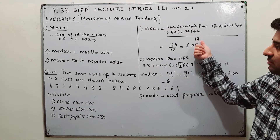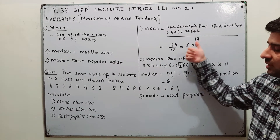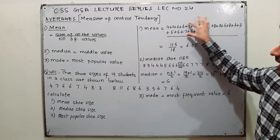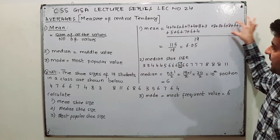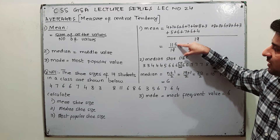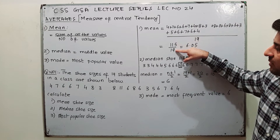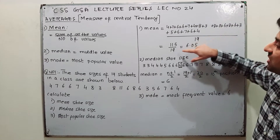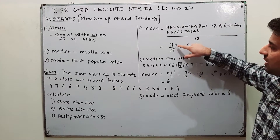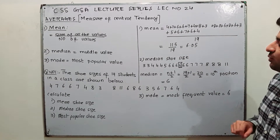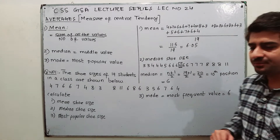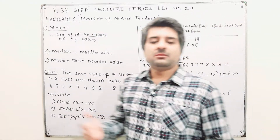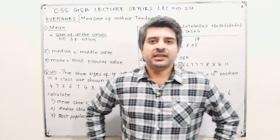There are 19 students, so when you add all the shoe sizes they add up to 115. Divided by the number of values, which is 19, gives 115 over 19 = 6.05. This is the mean shoe size.